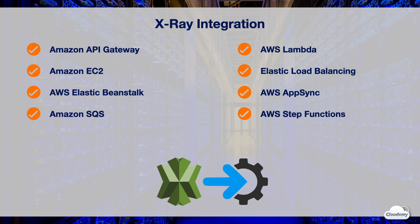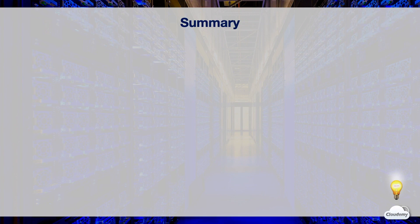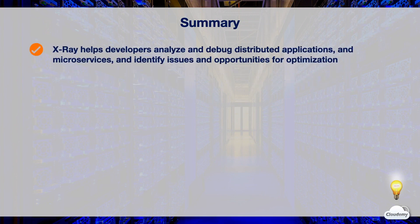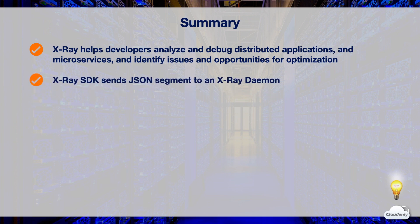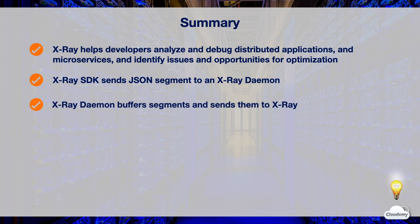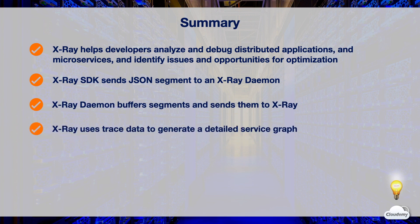In this episode we've learned about AWS X-Ray. X-Ray helps developers analyze and debug distributed applications and microservices and identify issues and opportunities for optimization. You add the X-Ray SDK to your application code; the SDK collects application status data and sends JSON segments to the X-Ray daemon. The daemon buffers segments and sends them via the X-Ray API. X-Ray uses trace data to generate a detailed service graph, helping you visualize downstream services and identify bottlenecks, latency spikes, and other issues to improve application performance.